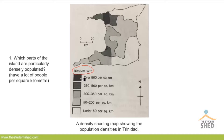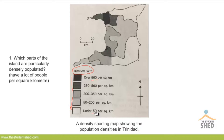The darker shading represents over 560 persons per square kilometer, and as the shading goes lighter as we go down, the lightest shading represents under 50 persons per square kilometer.